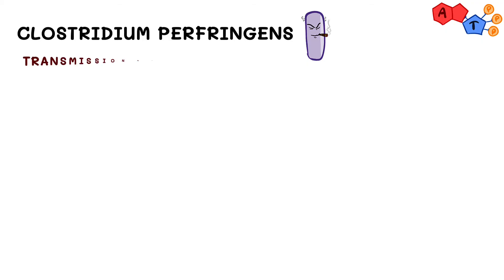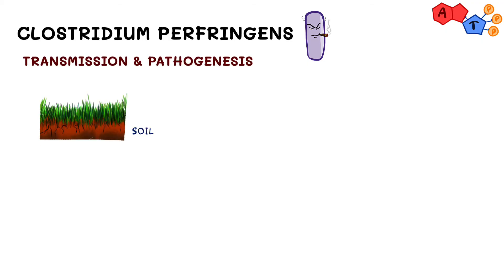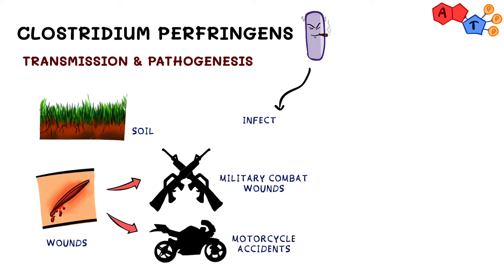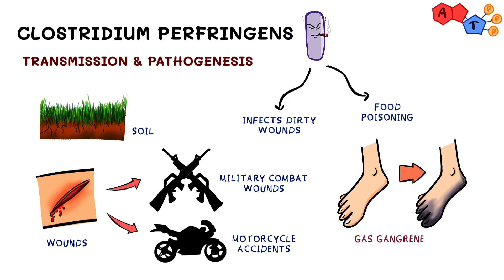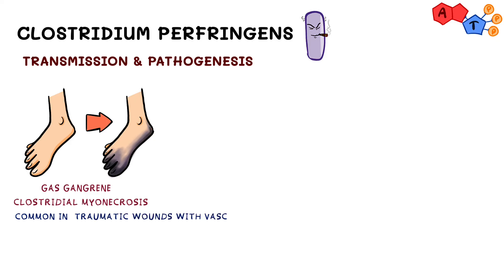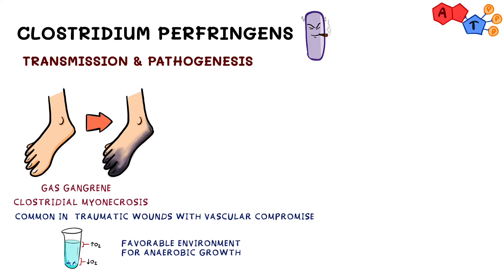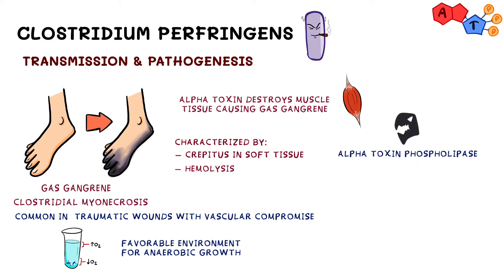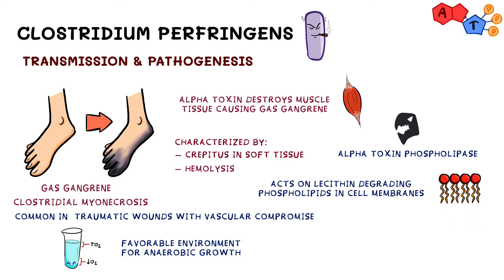Clostridium perfringens is also found widespread in nature, especially in soil. It's highly associated with military combat wounds and motorcycle accidents, and it can either infect dirty wounds or cause food poisoning. Clostridium perfringens can cause gas gangrene, also known as clostridial myonecrosis. This happens in traumatic wounds with vascular compromise, because this creates a favorable environment for anaerobic growth. It produces alpha toxin, which destroys muscle tissue and causes gas gangrene characterized by crepitus in soft tissue and hemolysis. The toxin is a phospholipase that acts on lecithin, degrading phospholipids in cell membranes and leading to hemolysis.